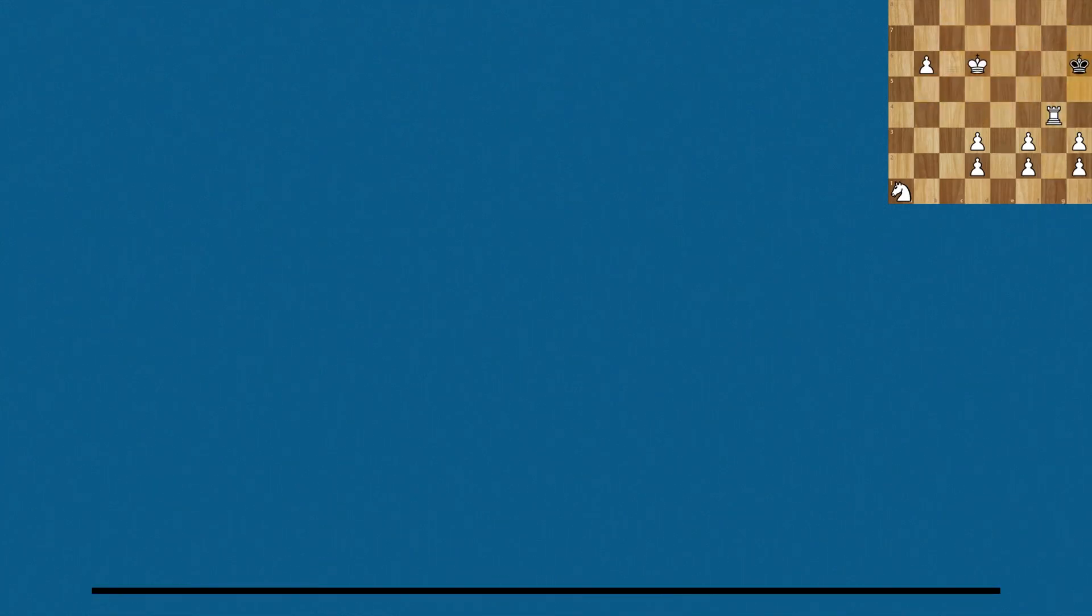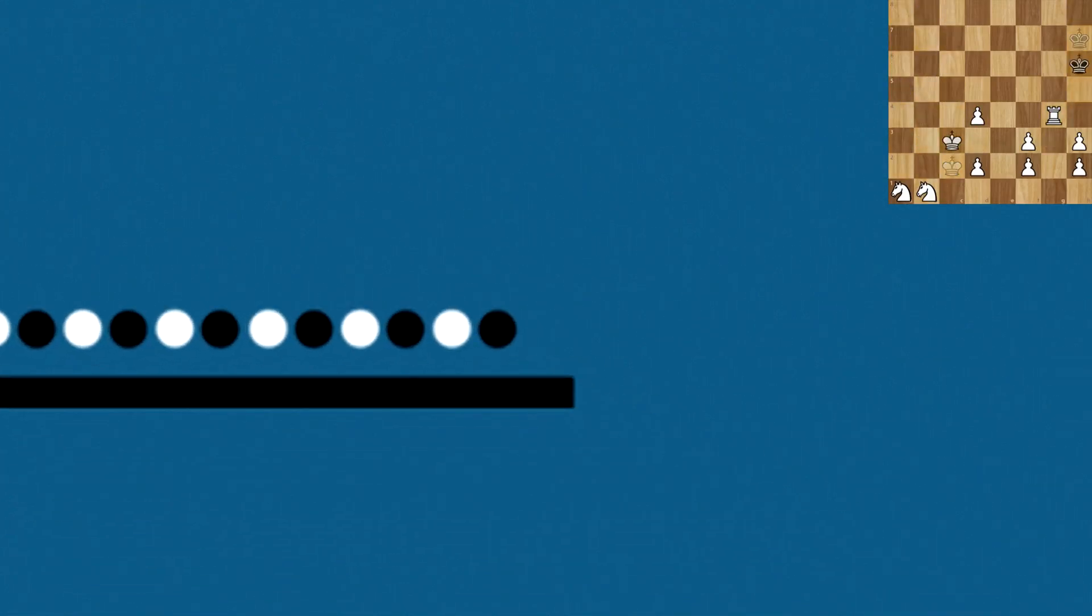As mentioned before, the 50 move rule is made up of 50 moves, and each move is made up of 2 tempi, 1 move from white and 1 move from black. Therefore, we know that the 50 move rule is made up of 100 tempi, when the 100th tempi is passed, the game will be drawn. Why is this important?